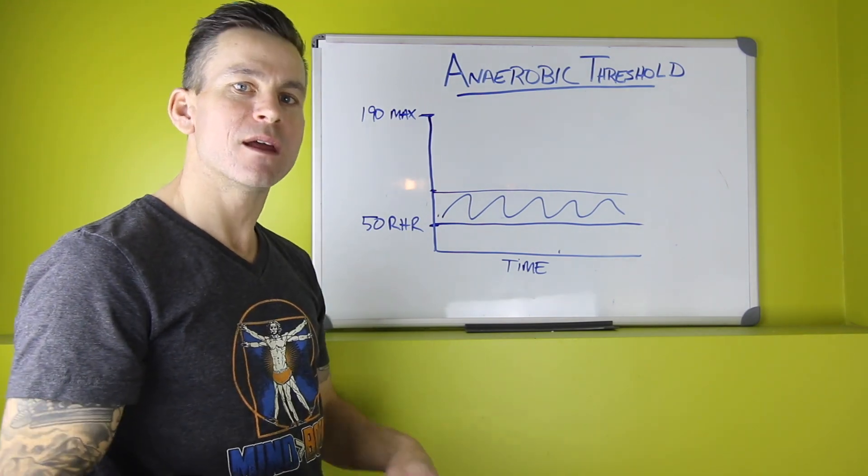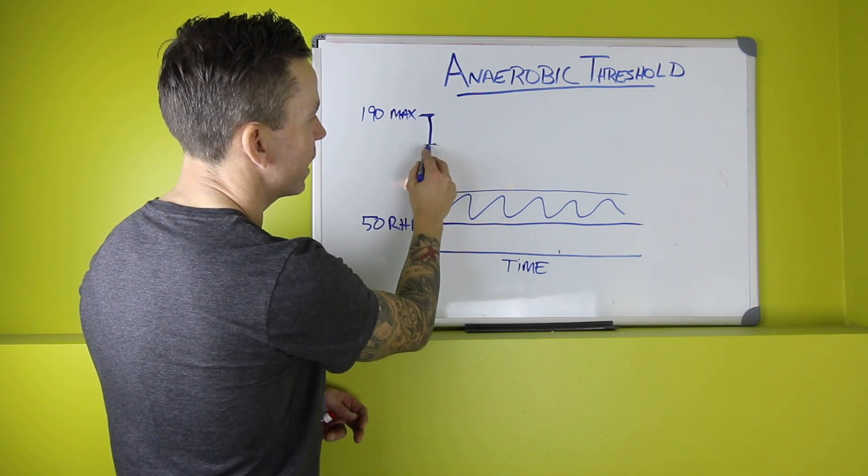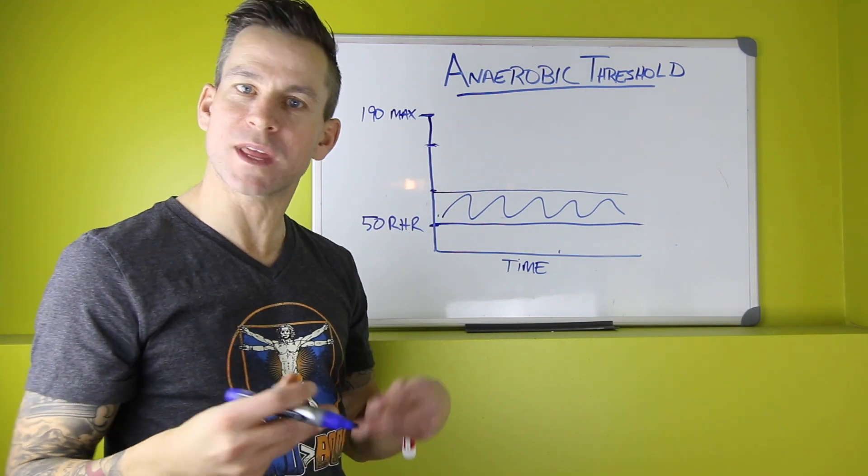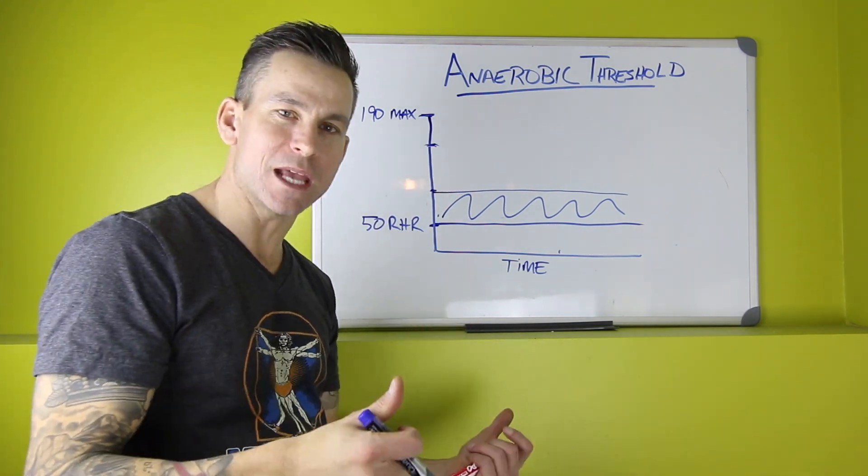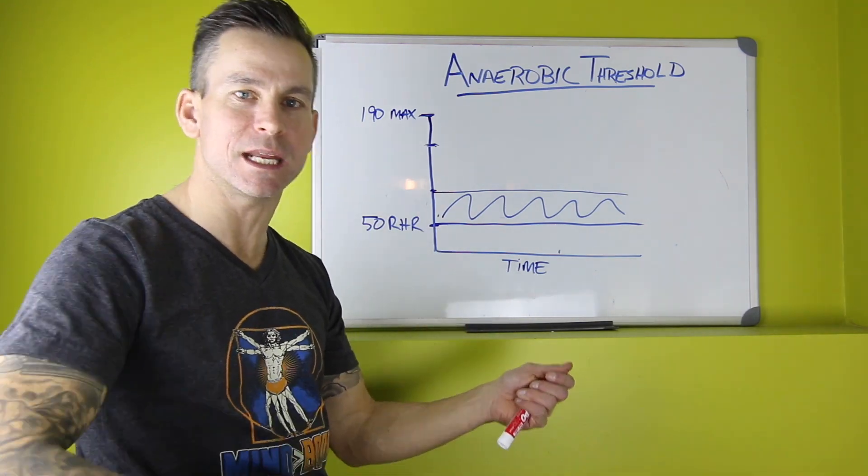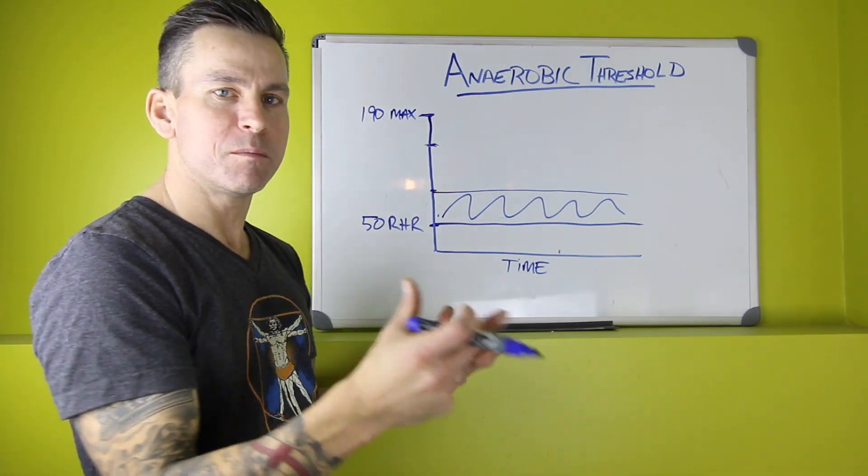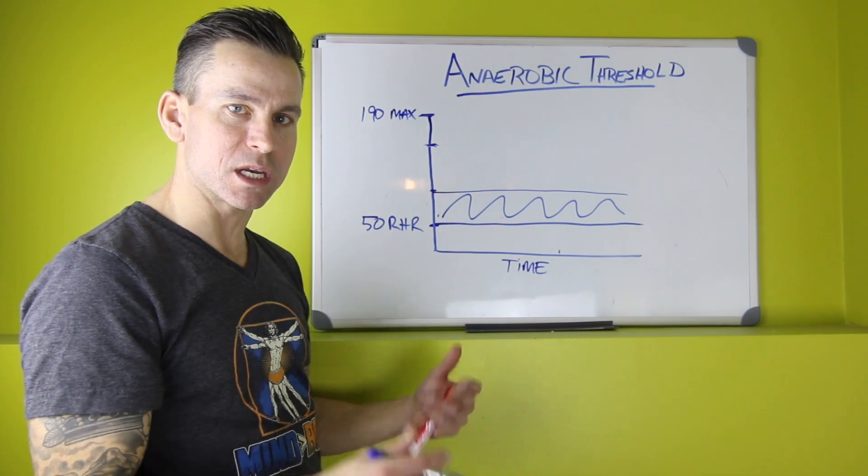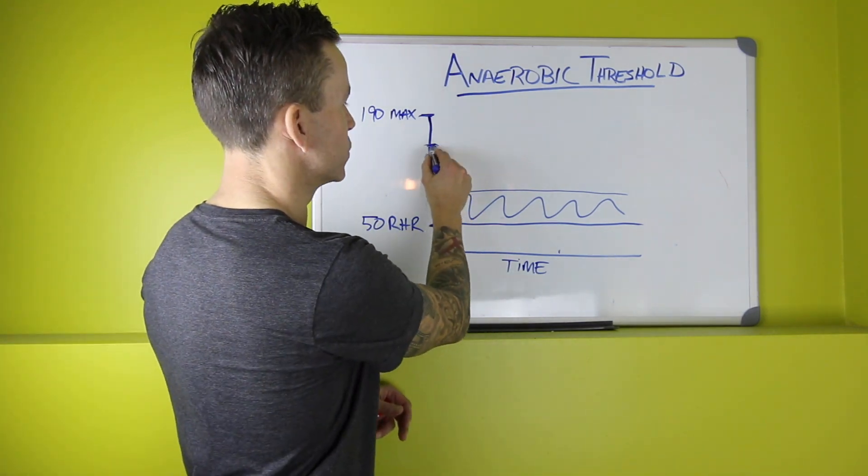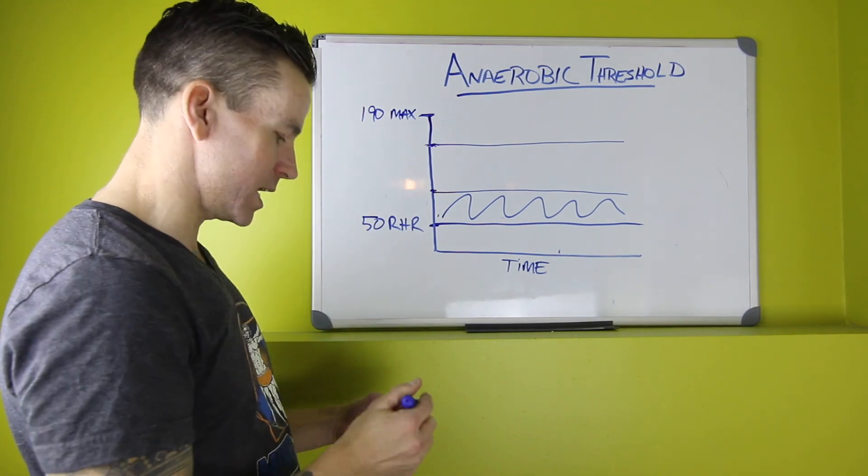In order for us to get threshold development, we want to spend time right at that threshold. As I mentioned before, for the average person, that might be the pace or the heart rate you're going to be at for about an hour. That might be somewhere between a 10K intensity and a half marathon intensity. For this example, we'll say maybe it's in that 85 to 90% of your maximum heart rate where your threshold would sit.